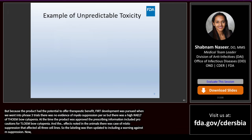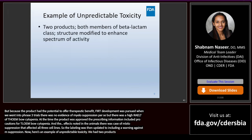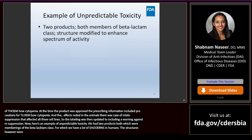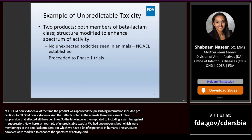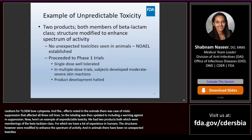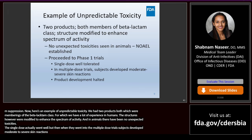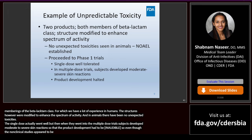Here's an example of unpredictable toxicity. Two products were both members of a beta-lactam class — a very well-known class of antibacterial drugs. The structures of these beta-lactams were modified to enhance the spectrum of activity, and in animals there had been no unexpected toxicities, so both sponsors proceeded to conduct Phase I trials. The single dose actually went well, but when they went into the multiple dose trials, subjects developed moderate to severe skin reactions such that product development had to be halted. Even though the non-clinical studies appeared benign, that doesn't mean you won't see it when you go into humans.